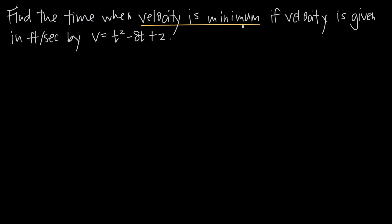We're trying to minimize velocity, which means we need a function for velocity. Whatever you're minimizing or maximizing, that's the function you want to be working with. In this problem, luckily, we've already been given a function for velocity — it's the function v.